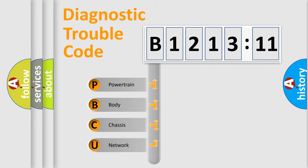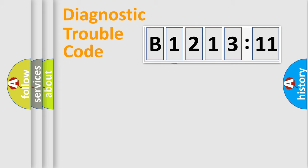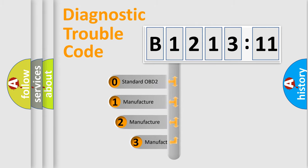We divide the electric system of automobile into four basic units: Powertrain, Body, Chassis, and Network. This distribution is defined in the first character code.